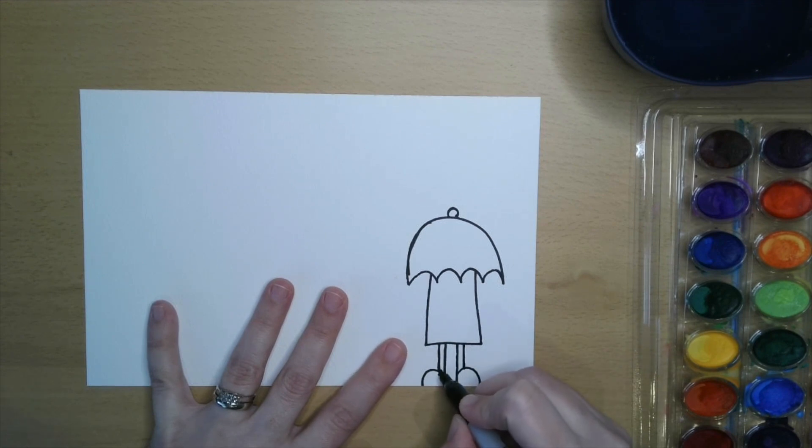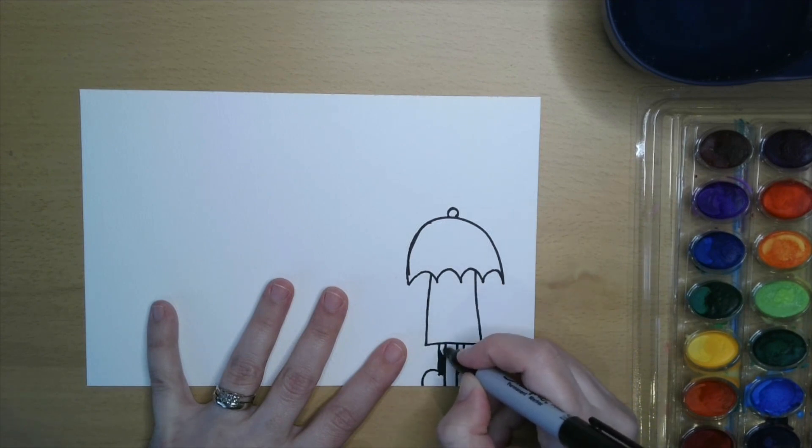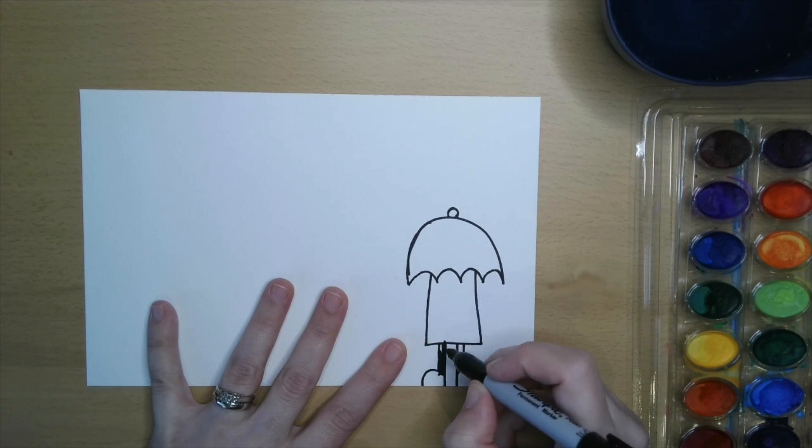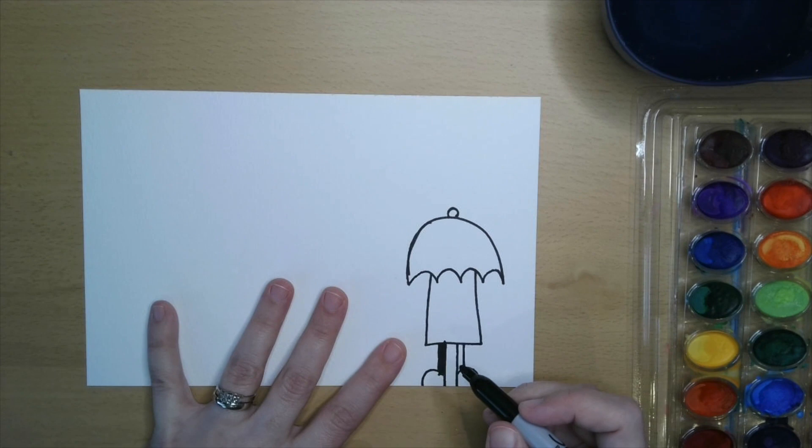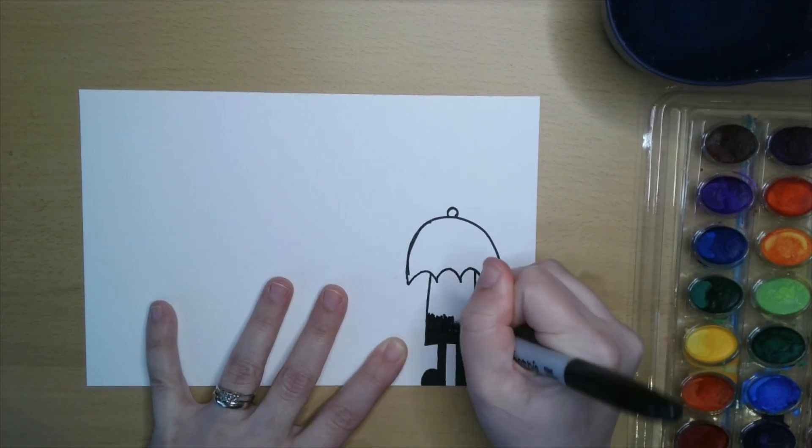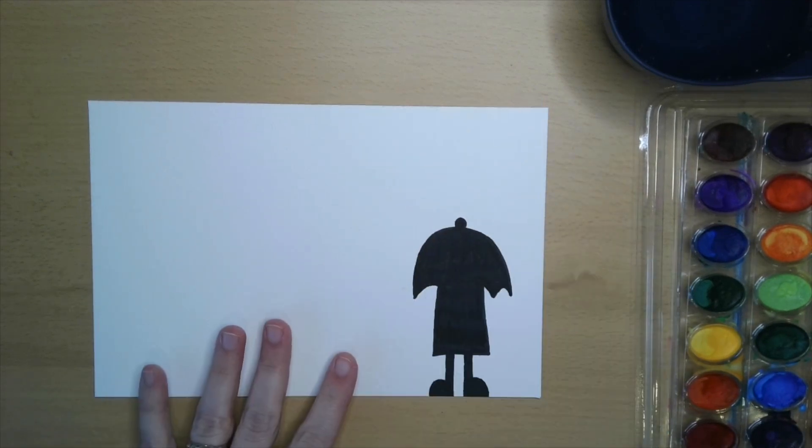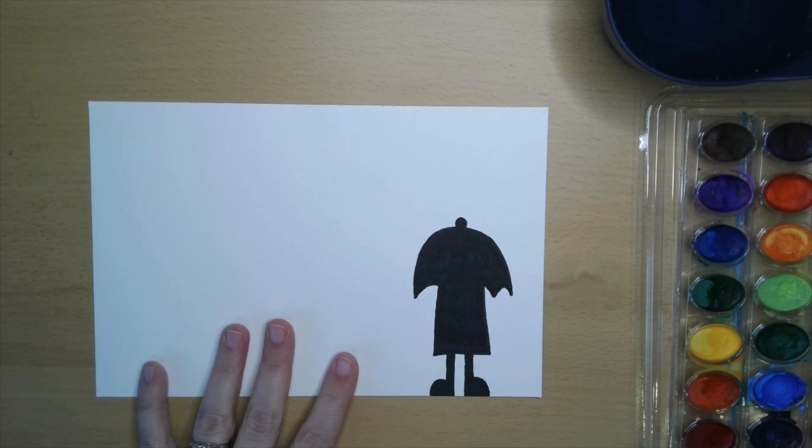Then I'm gonna color in this whole body and umbrella shape with my Sharpie so that it looks like a silhouette. That means it looks like my whole body is covered in shadows and you can't really see any colors or details. That will make my colorful rain really stick out. There. Now my person and my umbrella are all colored in and it looks like I'm standing in a shadow—a silhouette of my body.